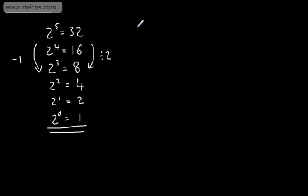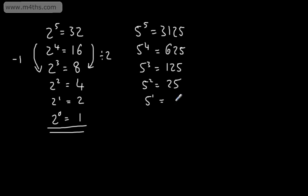If we take another number, let's take 5. 5 to the power of 5, that's 3,125. 5 to the power of 4 is going to give me 625. 5 to the power of 3 is going to give me 125. 5 squared, or 5 to the power of 2 is 25, and then 5 to the power of 1 clearly is going to give us 5.